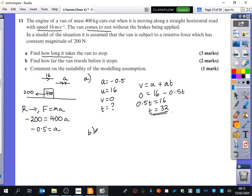They've said that's only worth three marks—I don't think that's very fair. How far the van travels before it stops? So we still know that the acceleration is minus 0.5.